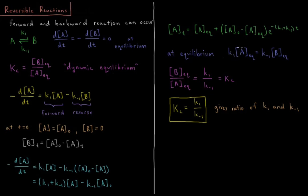At equilibrium, K1 times A-equilibrium equals K-1 times B-equilibrium. Therefore B-equilibrium over A-equilibrium equals K1 over K-1, which is also equal to our equilibrium constant. So for reversible reactions, the equilibrium constant equals the forward rate constant divided by the backward rate constant.